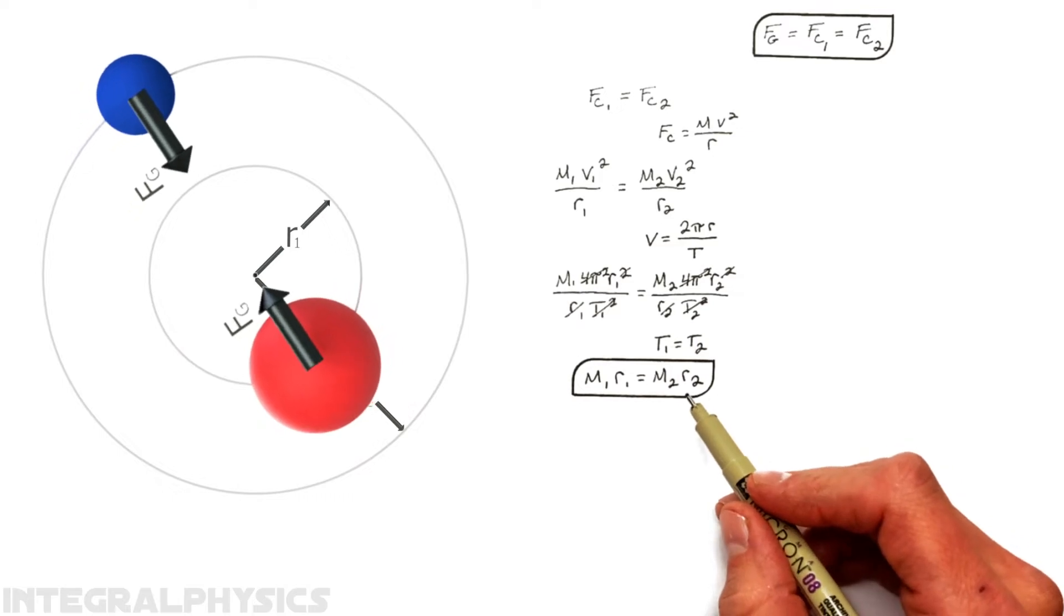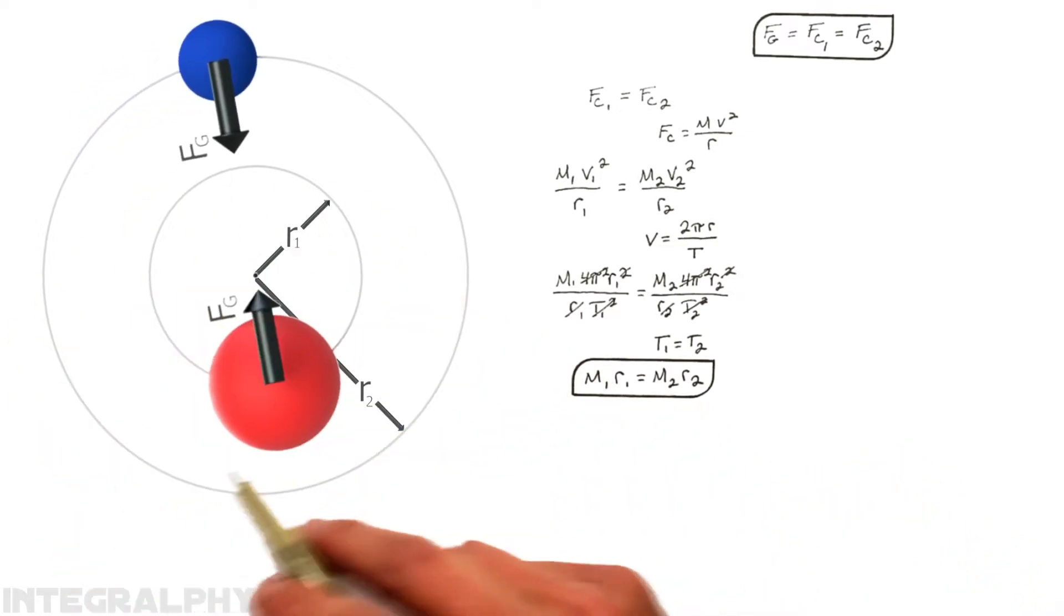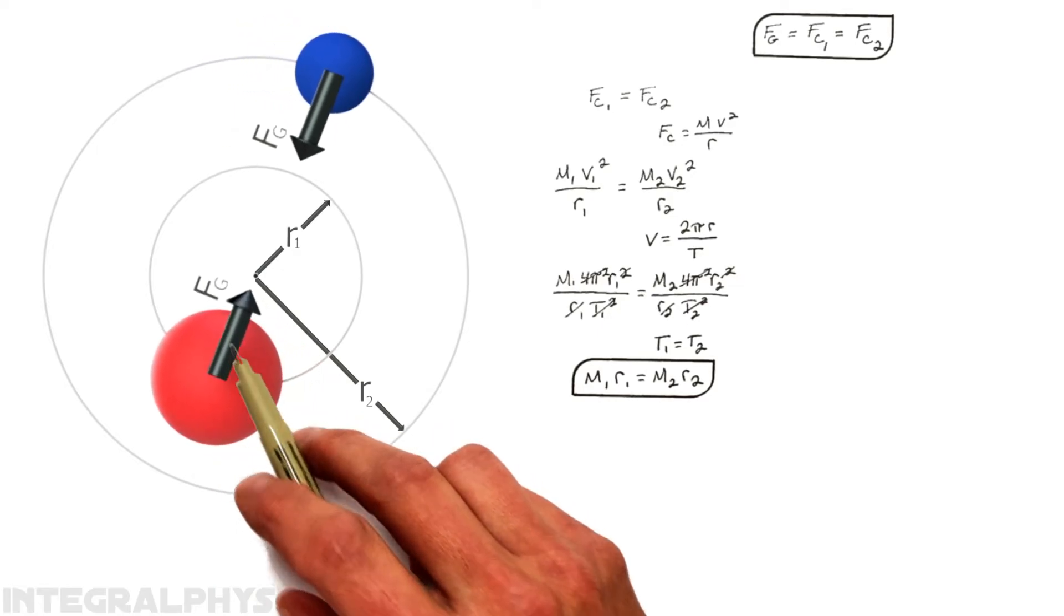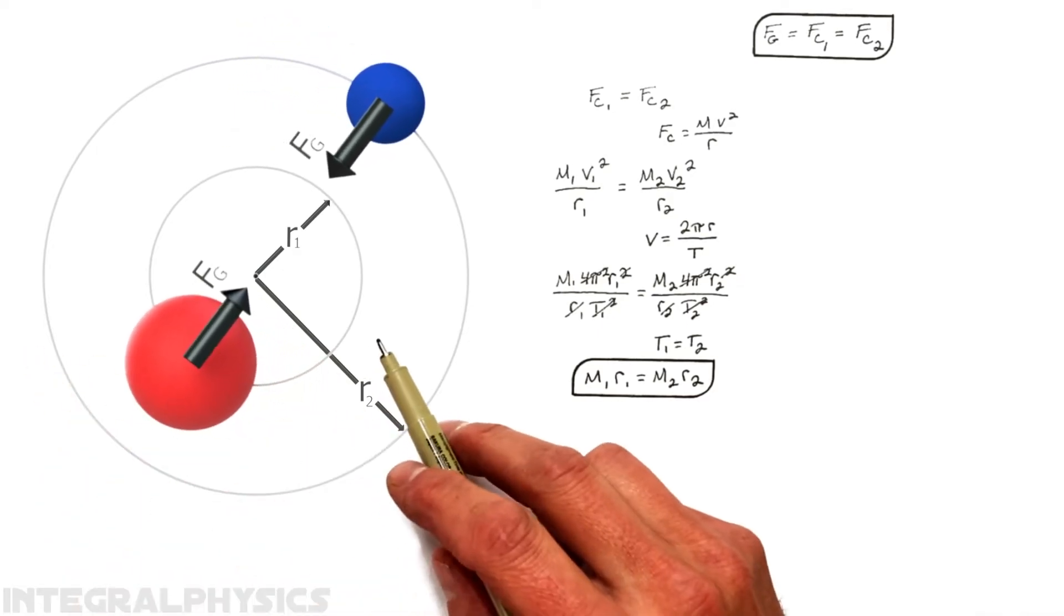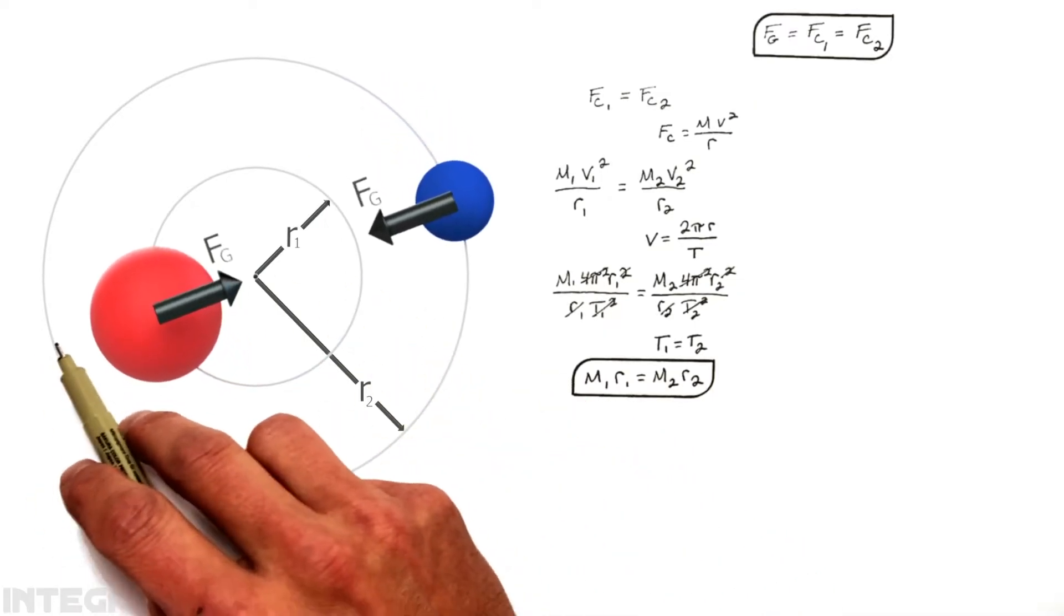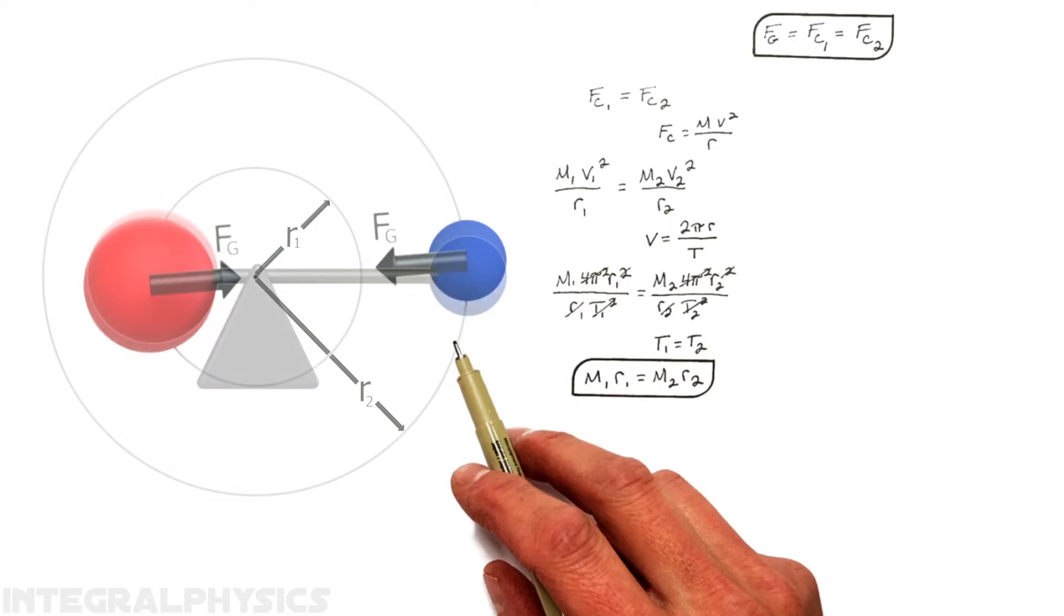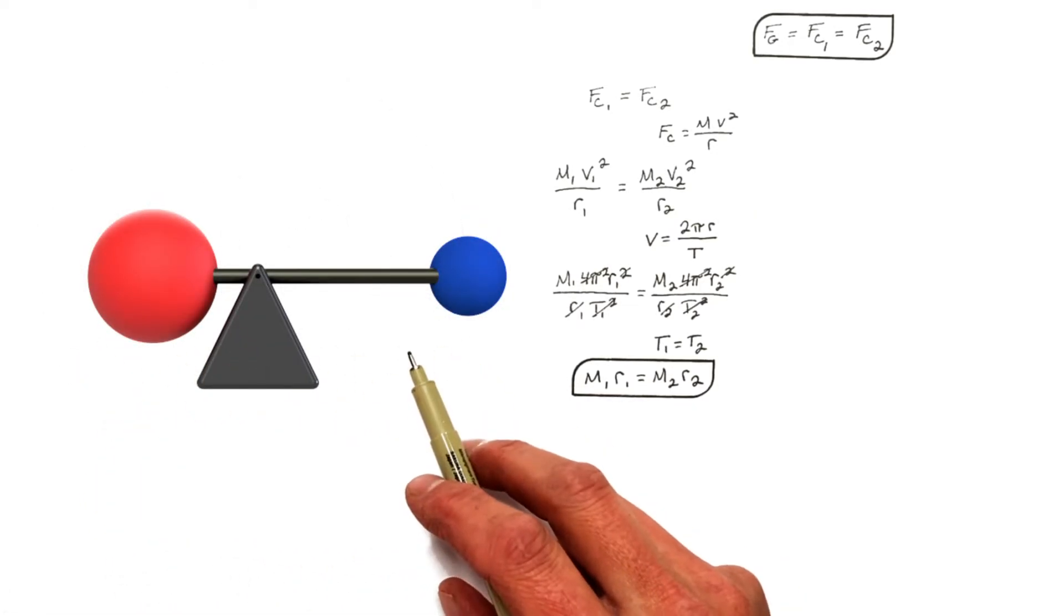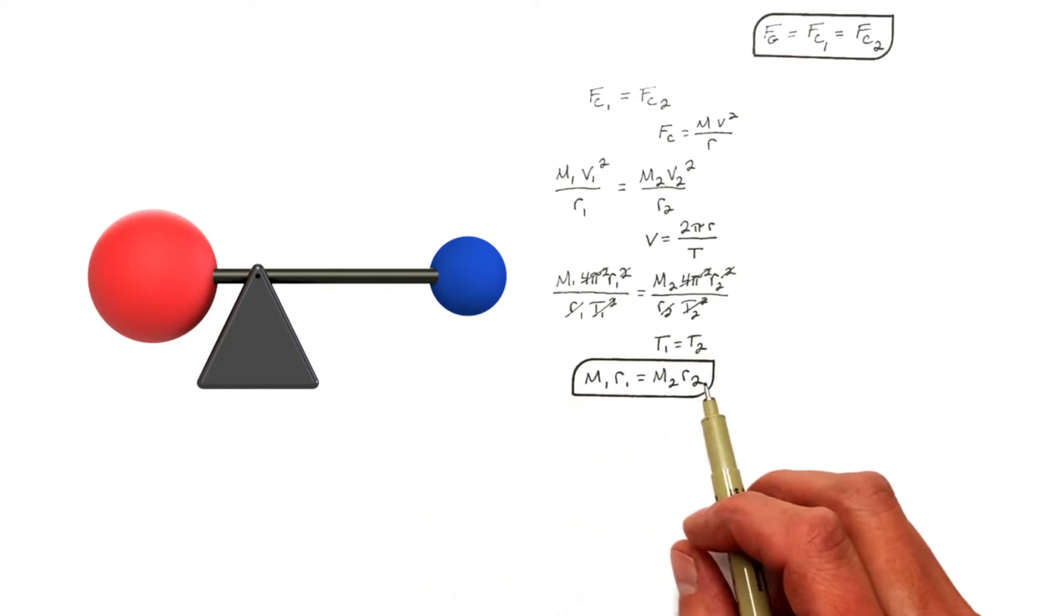Now, it may not seem obvious, but this equation actually proves that these two masses are orbiting around their center of mass. You see, if you were to view these two masses as though they were not masses in orbit around one another, but rather say two masses sitting on the end of a seesaw, the balance point or the center of mass between those two masses would actually follow this equation.